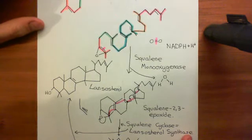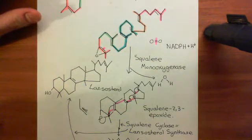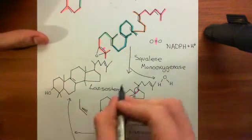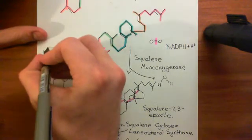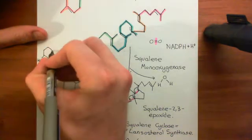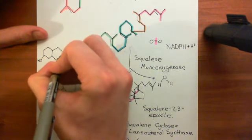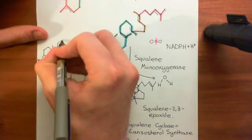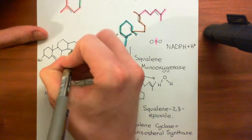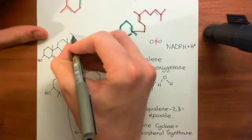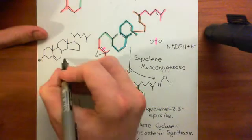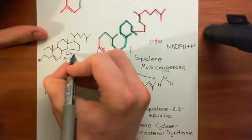We're not going to discuss how lanosterol then goes to cholesterol because it's got, as I say, about 20 steps in that process. However, you can hopefully appreciate that this has a similar structure to cholesterol. So if I just remind you of the structure of cholesterol: here's the A ring with the alcohol group coming off, then we've got the B ring, a double bond, a methyl group off there, then the C ring — the six-membered carbon ring — and then the five-membered D ring with a methyl group off there, and a seven-membered side chain with a methyl group off it. You can see that lanosterol and cholesterol have a similar structure.